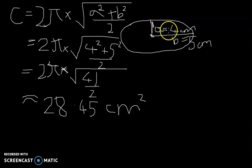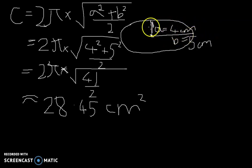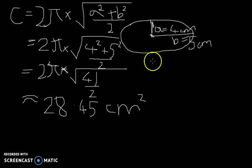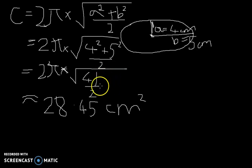This is a fairly round ellipse because the difference between the center and the circumference points is not too great — the range of the distances from the center point to the points on the circumference are not too different.